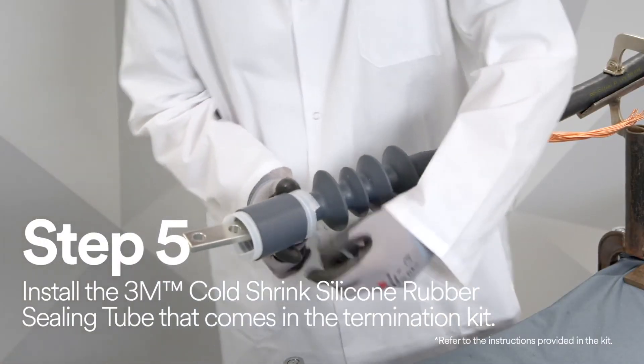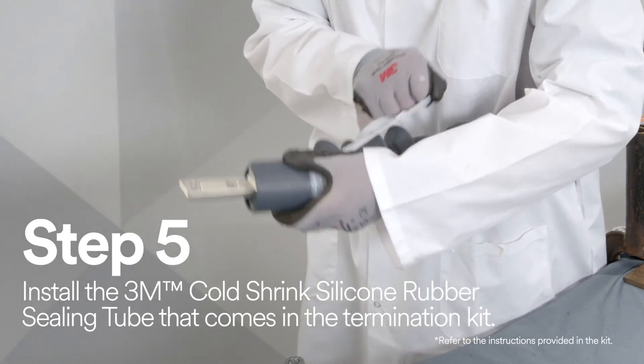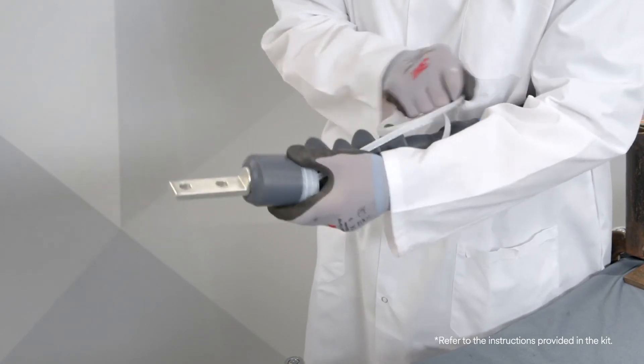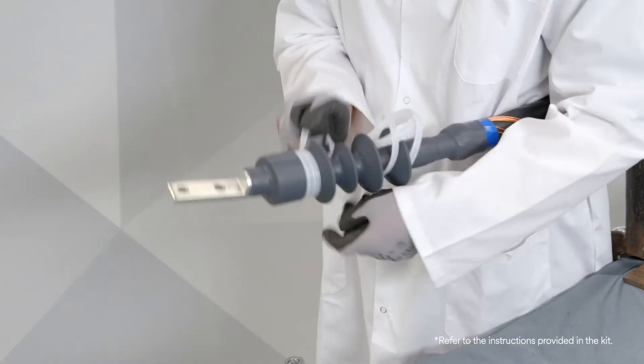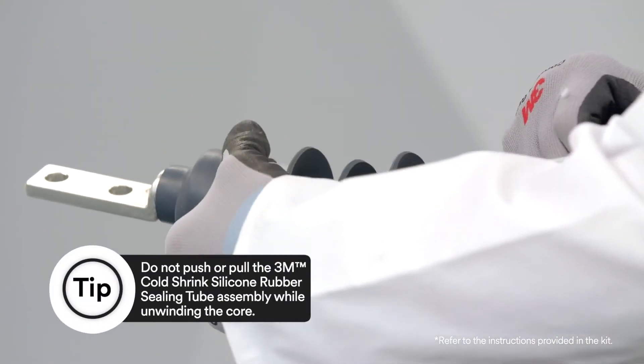Install the 3M Cold Shrink Silicone Rubber Sealing Tube over the foil tape by aligning the edge of the 3M Cold Shrink Silicone Rubber Sealing Tube, not the core, with the lug body edge closest to the connection holes. The loose core end will be facing towards the cable and termination assembly.